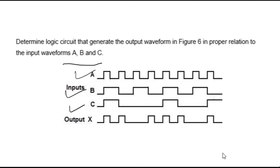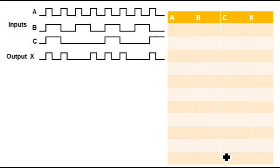A is given to you, B is given to you, C is given to you in waveform, and output is X. So this means you have input waveforms and output waveform. Your target is to get the circuit — which circuit is giving you output X when input is given to you. The first step will be to draw the truth table, so that we can easily see what output we get for each combination of A, B, C.